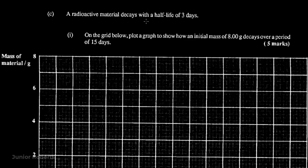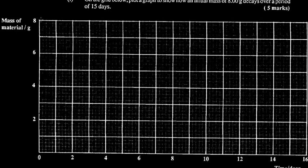The next question says a radioactive material decays with a half-life of three days. We must plot a graph showing how an initial mass of 8 grams decays over 15 days. Since the half-life is three days, every three days the mass reduces by half. At time zero the mass is 8 grams. After 3 days it goes to 4 grams. After 6 days it goes to 2 grams. After 9 days it goes to 1 gram. The half-life is the time taken for the mass or activity of a radioactive sample to reduce to half its previous value.